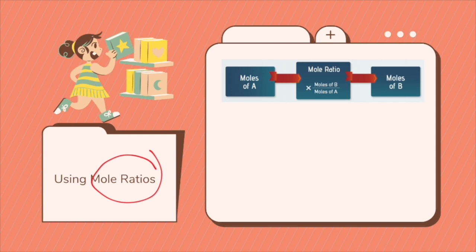The mole ratio is used with dimensional analysis to determine the amounts of starting and ending substances. Mole ratio can be used as a conversion factor in stoichiometry because chemical reactions follow the law of conservation of mass — mass is not lost between the reactants and the product. So all stoichiometry problems involve: one, balancing the equation; two, the mole ratio; and three, dimensional analysis.